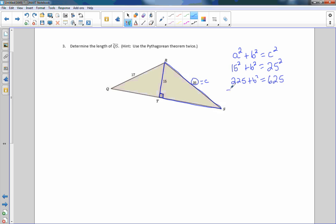If I subtract this 225 to get B squared by itself, then this cancels and I get B squared. And 625 minus 225 is 400. So like before, whenever we have a B squared or an A squared or a C squared, to do the inverse of squaring is square root and the square root of B squared is B, and the square root of 400 is 20. So I just found TS. TS is 20.